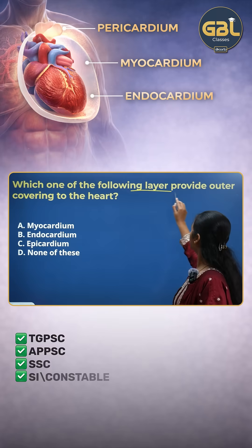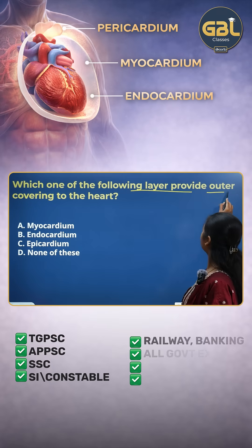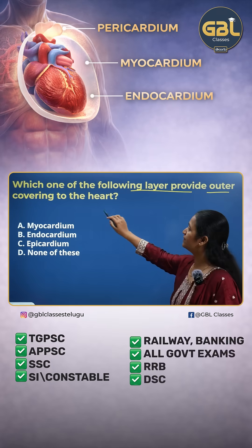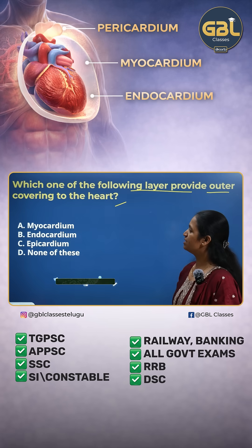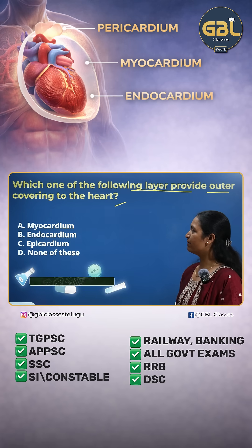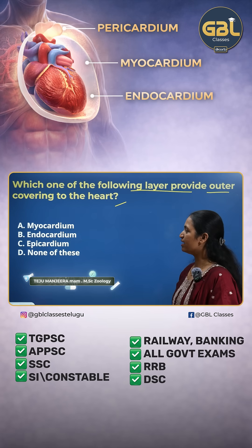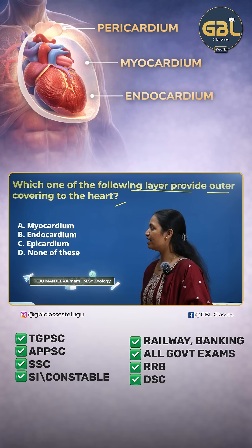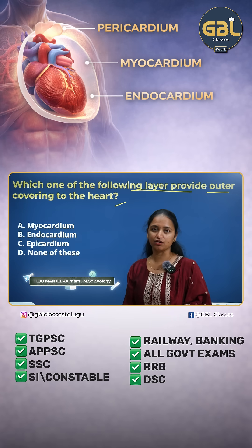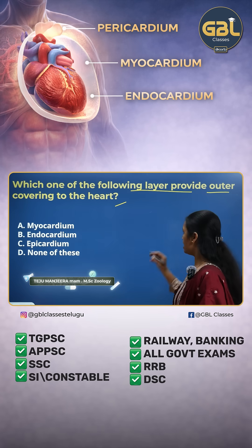Which of the following layers provides the outer covering of the heart? First one: myocardium, endocardium, epicardium, none of these.